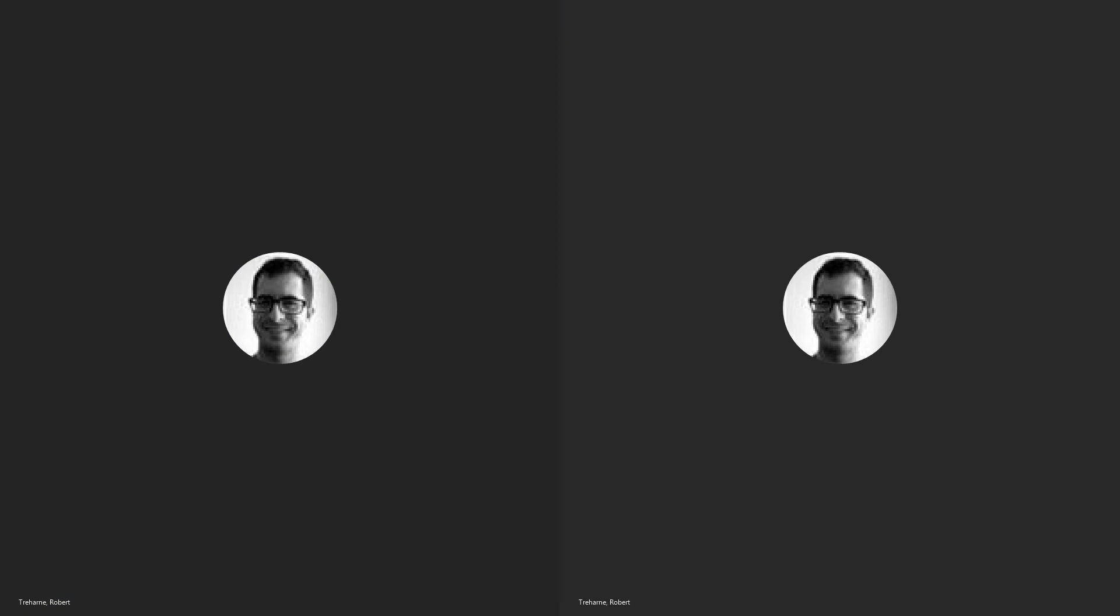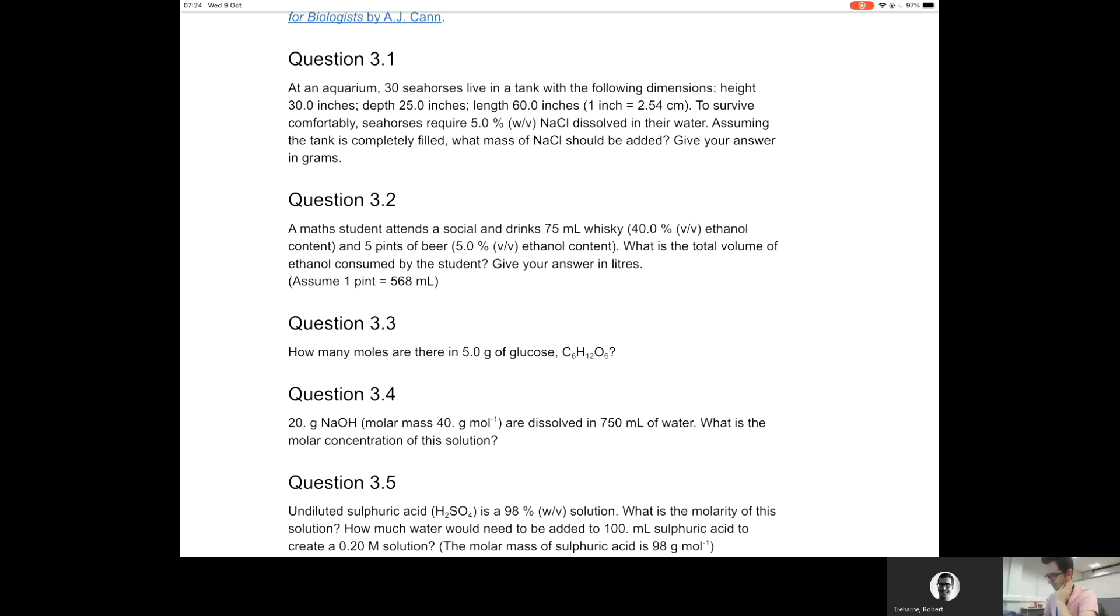Question 3.3: How many moles are there in 5.0 grams of glucose? Glucose has the molecular formula C6H12O6. So how do we work that out? Well, to know that we need to know the molar mass of glucose.